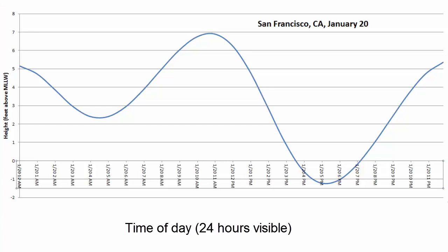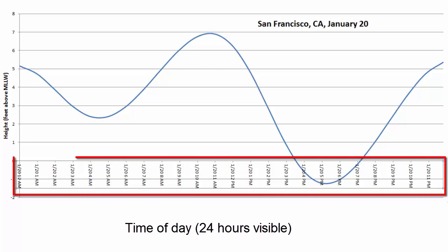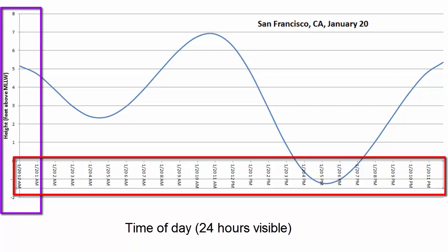Let's start our discussion of tides by reviewing tidal data for a day in San Francisco. In this graph, the x-axis shows time — in this case one day's worth of time — and the y-axis shows height above a zero level. This image shows how tidal wave height varies over a 24-hour period at a specific beach in San Francisco.